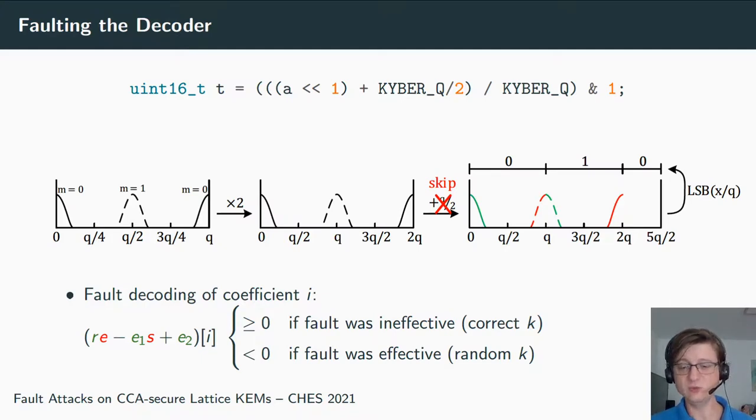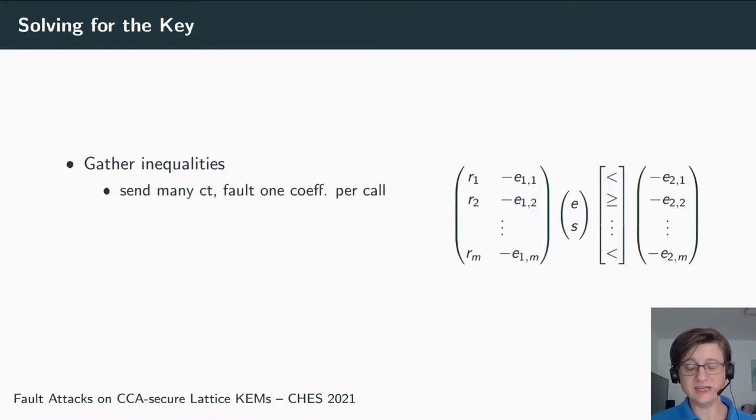So we now gather such—what we have now is an inequality. On the left we have something which is linear in the key, and then we get: is this larger than or equal to zero, or smaller than zero? A linear inequality. So we now gather many such inequalities. We get one inequality per faulted decapsulation. So we generate many ciphertexts, we send it to the device, inject one fault per call, and we get one inequality out of it.